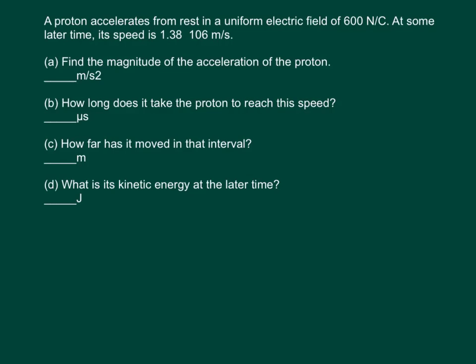In A we're going to find the magnitude of acceleration. B, we're going to find out the time, how long it takes to get to that speed. C, we're going to see the distance it moved in that interval, and D, what is its kinetic energy when it gets to that speed.